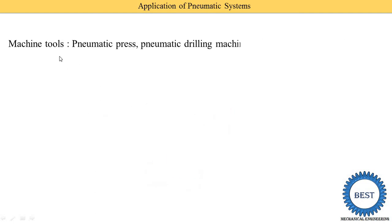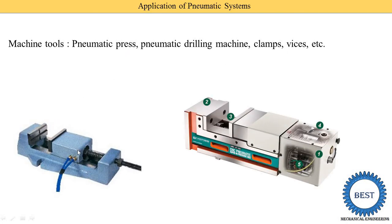The next application is machine tools. In different industries, various machines are used, and some are pneumatically operated, such as pneumatic presses, pneumatic drilling machines, clips, and vices. Here I show you a pneumatically operated vice — compressed air is supplied through an opening and operates the vice. This is another type of pneumatic vice operated by compressed air.